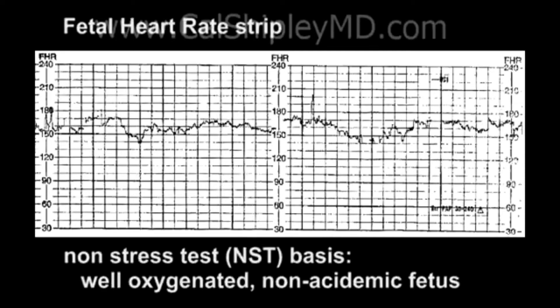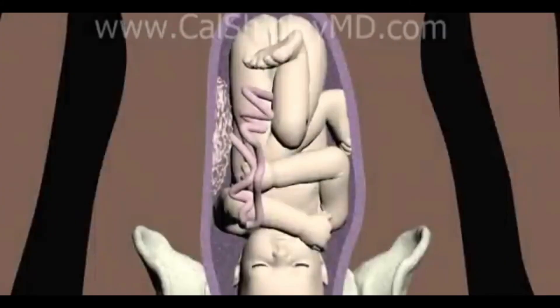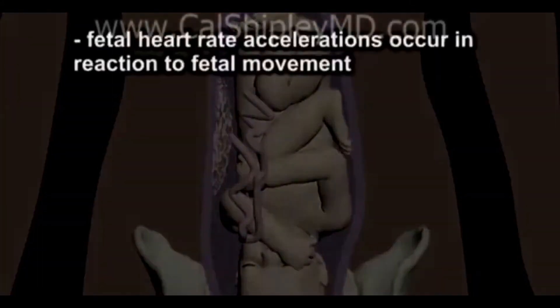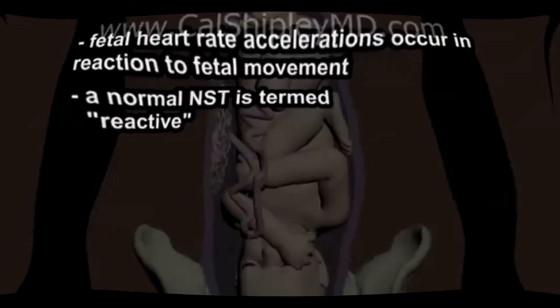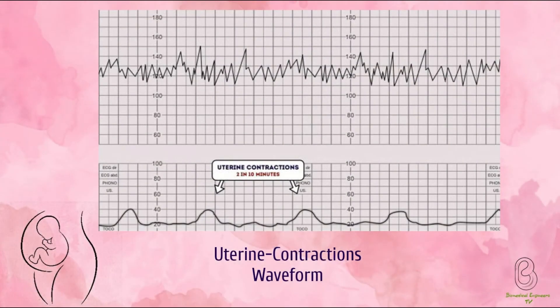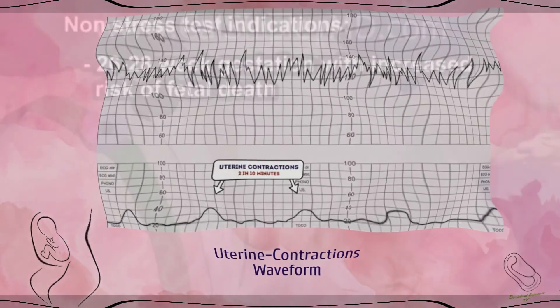When performing CTG interpretation, you first need to determine if the pregnancy is high or low risk, as this gives context to the CTG reading — for example, if the pregnancy is categorised as high risk, the threshold for intervention may be lower. Next, record the number of contractions present in a 10-minute period. Each big square on the CTG chart is equal to 1 minute, so look at how many contractions occurred within 10 big squares. Individual contractions are seen as peaks on the part of the CTG monitoring uterine activity. Assess contractions for duration — how long do they last — and intensity — how strong are they.